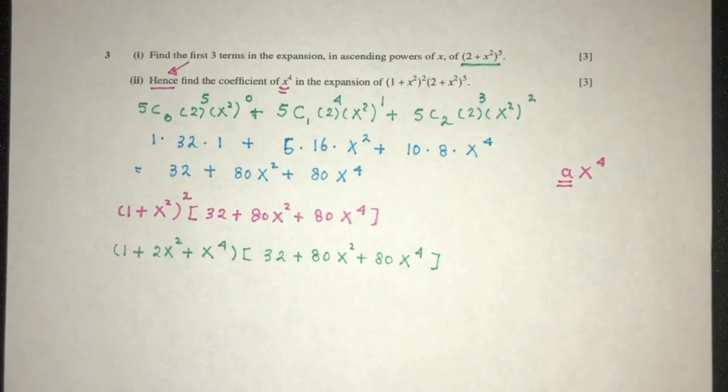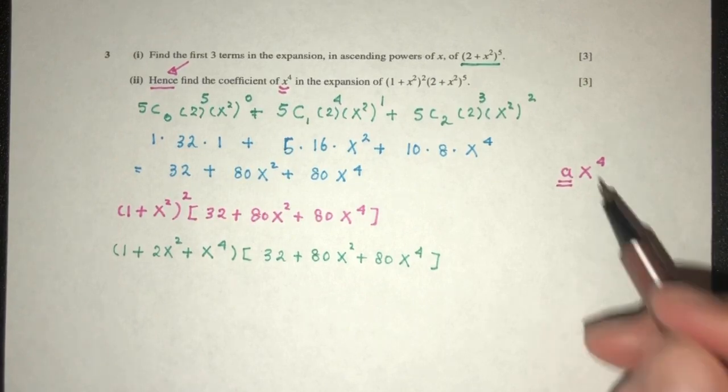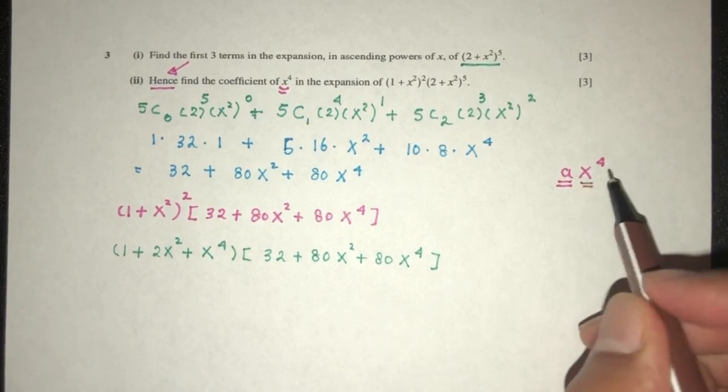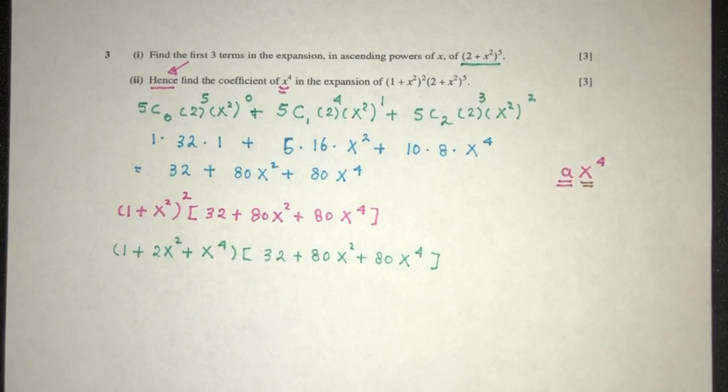Now, we have to choose which one that we will use, because we only care about the term in x power 4. Now you have two choices. One, you can expand everything, and then simplify and choose your result. Or you can pick and choose which one you want to multiply, so you get your answer directly.